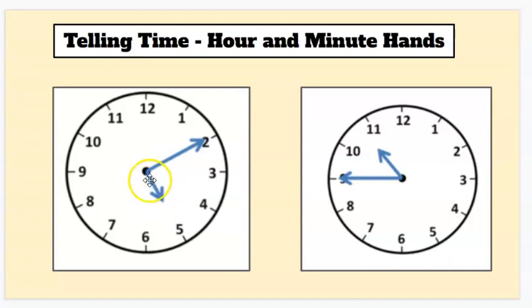Oftentimes that hour hand, short hand, baby hand will be pointed right at the hour. Right now, if I go straight down from it, I can see that it is pointed to five o'clock. So I know my hour is going to be five.